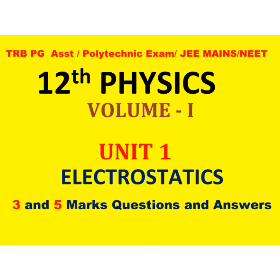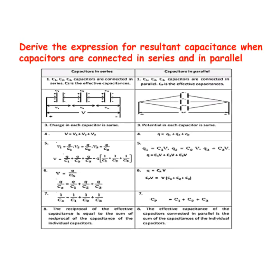Derive the expression for resultant capacitance when capacitors are connected in series and in parallel. First we want to know capacitors in series.